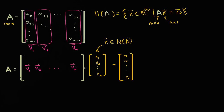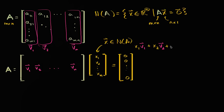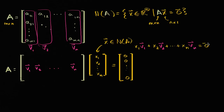Let's multiply this out using what we know of matrix multiplication. By the definition of matrix multiplication, A times x gives us the first column vector V1 times the first component x1, plus x2 times V2, and so on, all the way to x sub n times V sub n. When you add them all together, this is going to be equal to the zero vector.